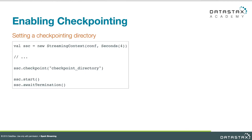Happily, it's not difficult to enable. On the Spark streaming context, we call the checkpoint method and pass it the directory or path in CFS where we'd like the data to be persisted. Then start the application and get on with your computations.